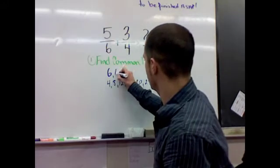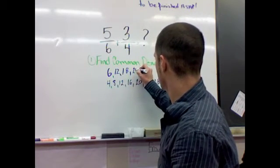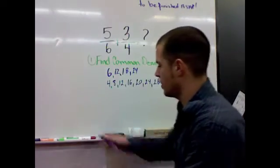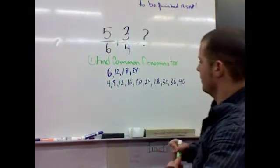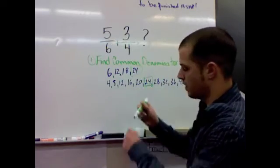And for 6, it's going to go 6, 12, 18, 24. Okay, so we've reached a common denominator. Here it is. 24 is our common denominator.